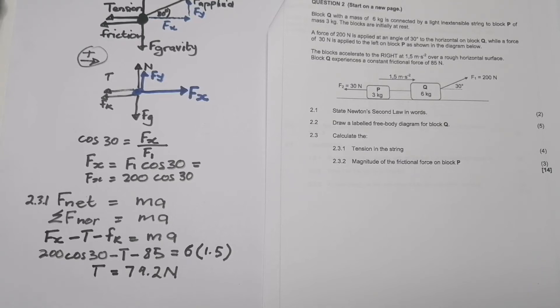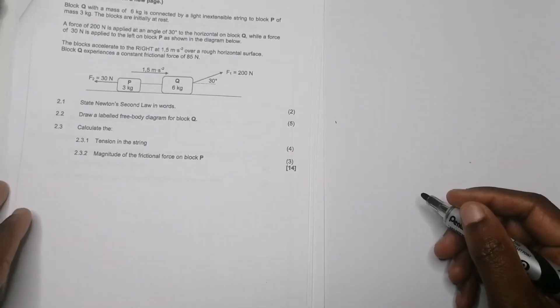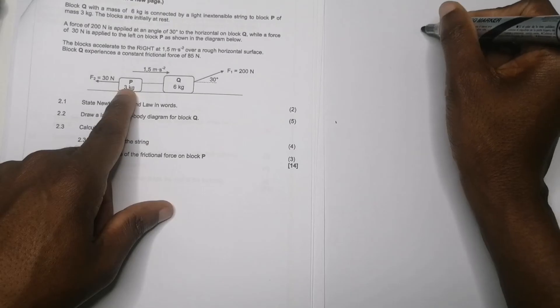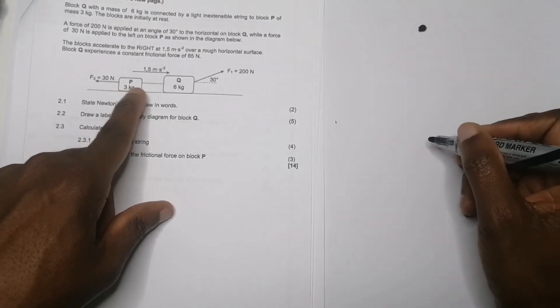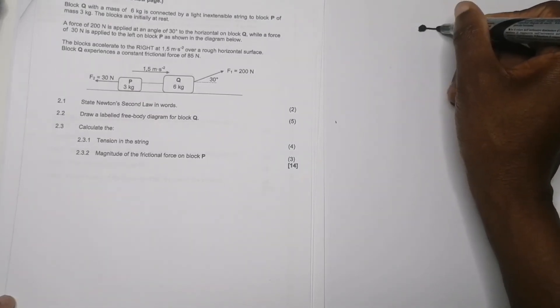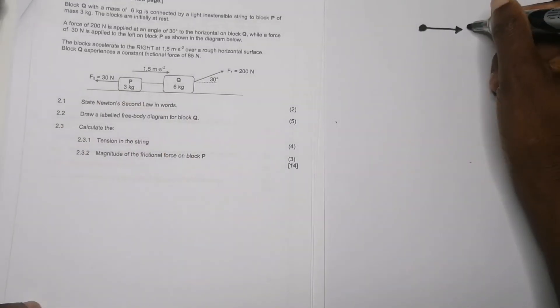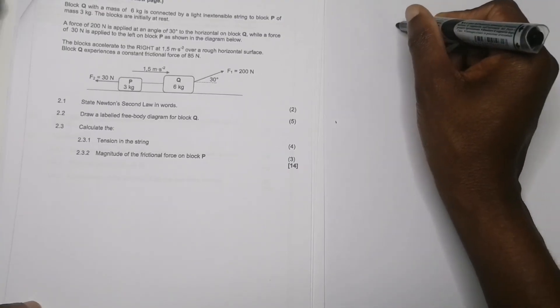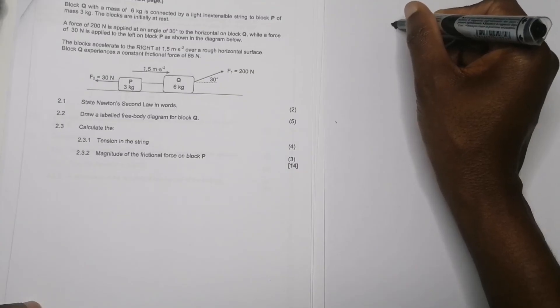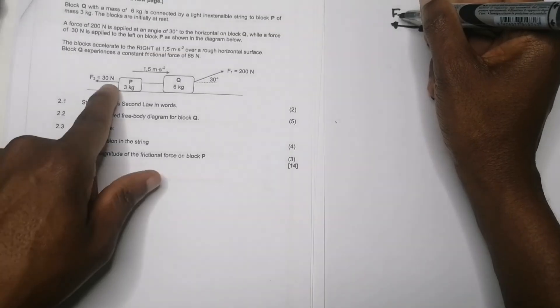Question 2.3.2 asks us to calculate the magnitude of the frictional force on block P. Looking at block P, the tension of 79.2 N causes it to accelerate to the right. I'll draw a quick free body diagram: tension acts to the right, the applied force F2 of 30 N acts to the left, frictional force acts to the left, and there are vertical forces — normal force upward and gravitational force downward.